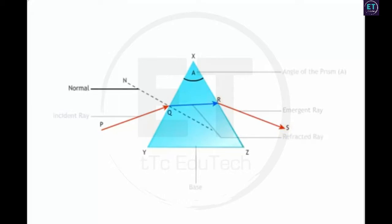Normal is the imaginary line drawn perpendicular to the surface at the point of incidence. The angle formed between the incident ray and the normal at the point of incidence is known as the angle of incidence. Thus, angle I1 is the angle of incidence on the face represented by XY. Similarly, angle R2 is the angle of incidence on the face represented by XZ. The angle between the normal and the refracted ray is known as the angle of refraction.